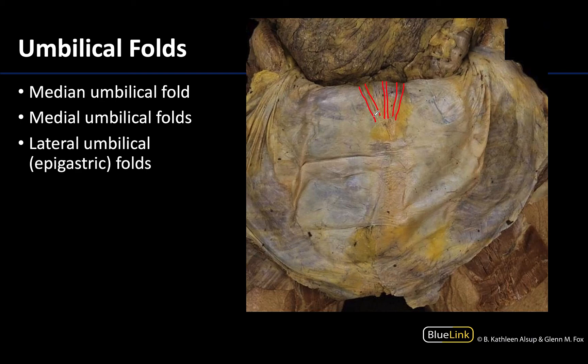The medial umbilical folds are formed by peritoneum covering the medial umbilical ligaments, and these are formed by the obliterated, or closed, portion of the umbilical arteries.